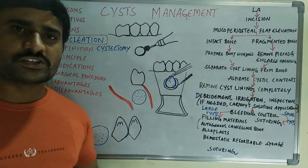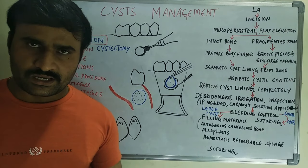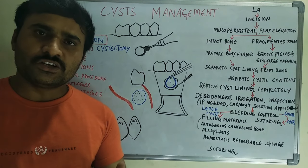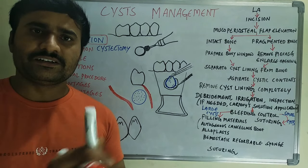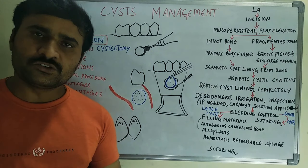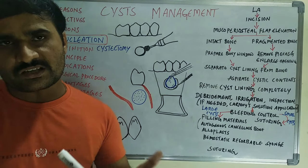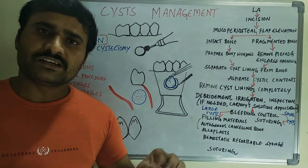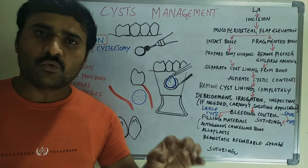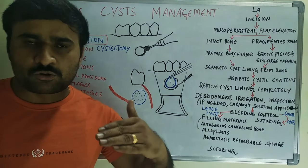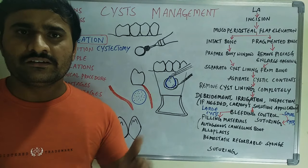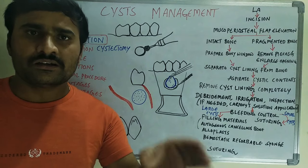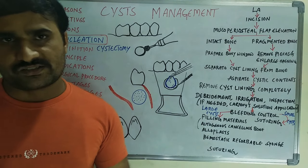In this video we will discuss cyst management. The reason for treating a cyst includes that it continuously grows and destroys the surrounding bone, leading to weakening. In the case of the mandible, it may lead to pathological fracture, or in the case of the maxilla, it may involve the maxillary sinus and erode the maxillary lining.